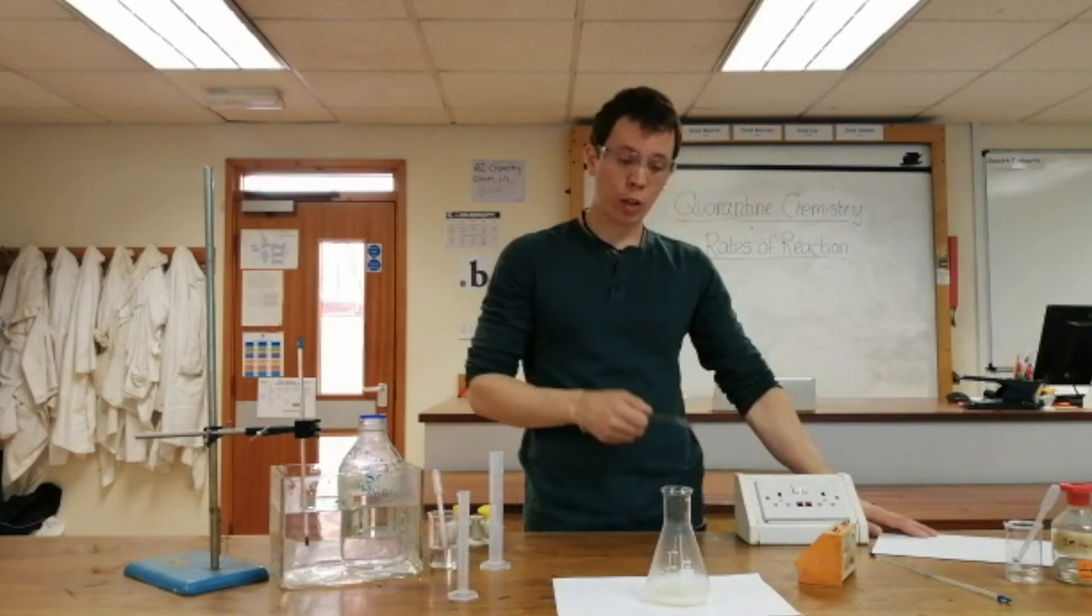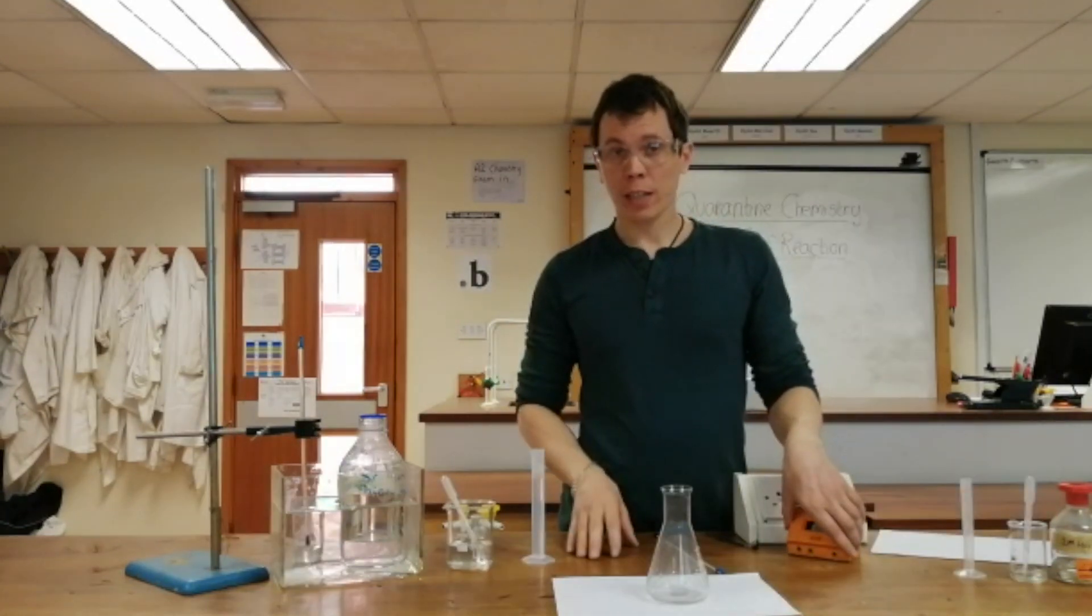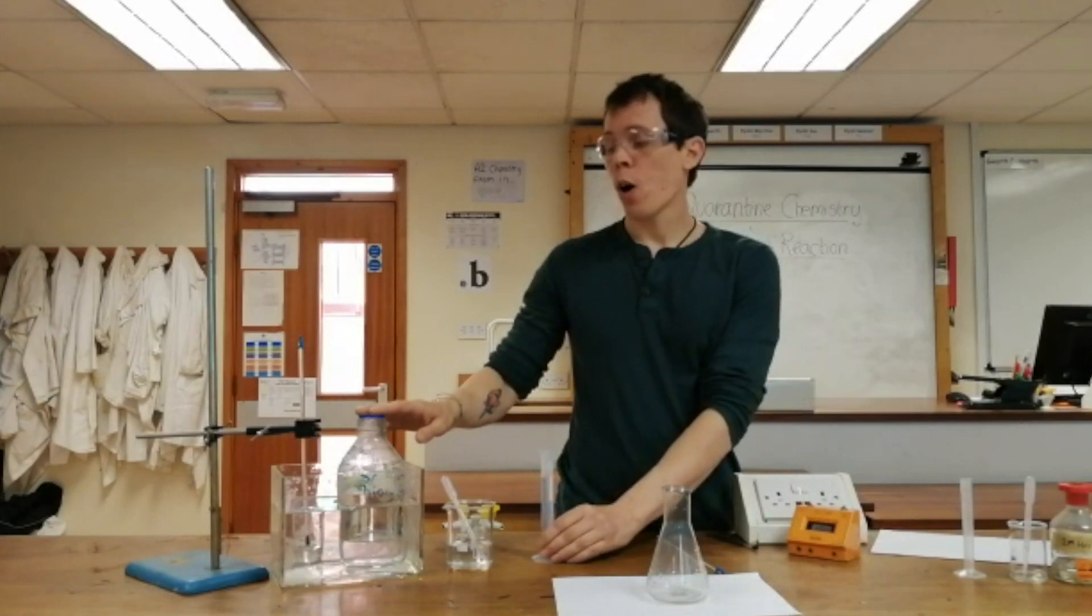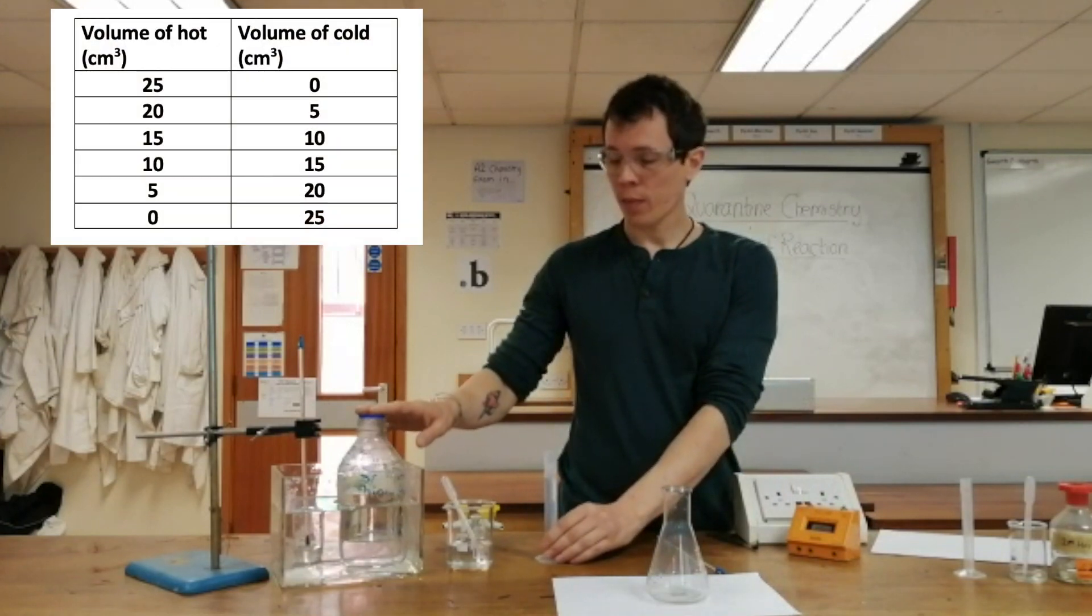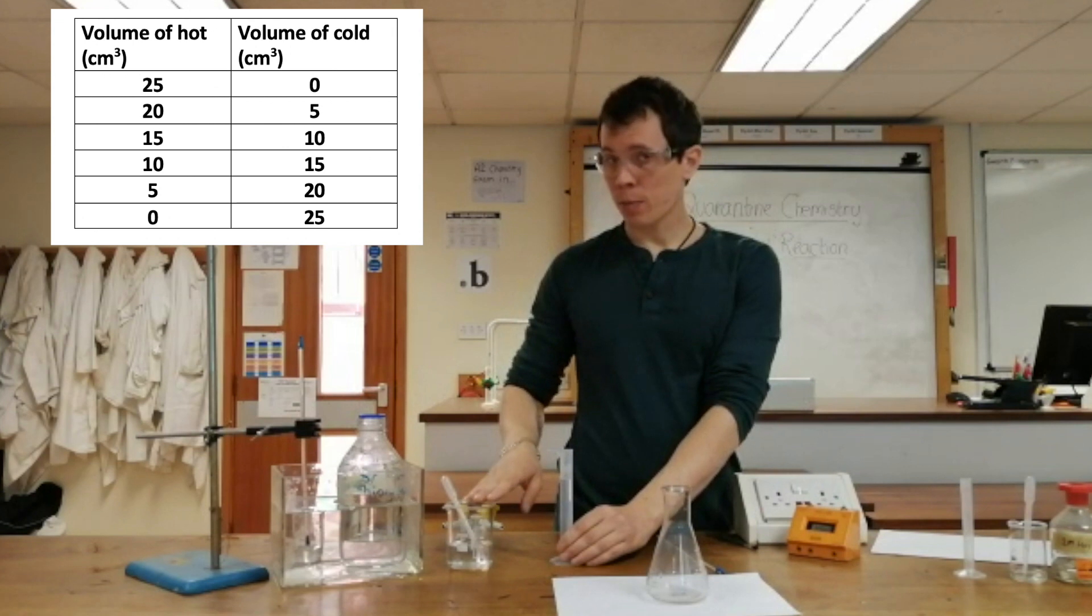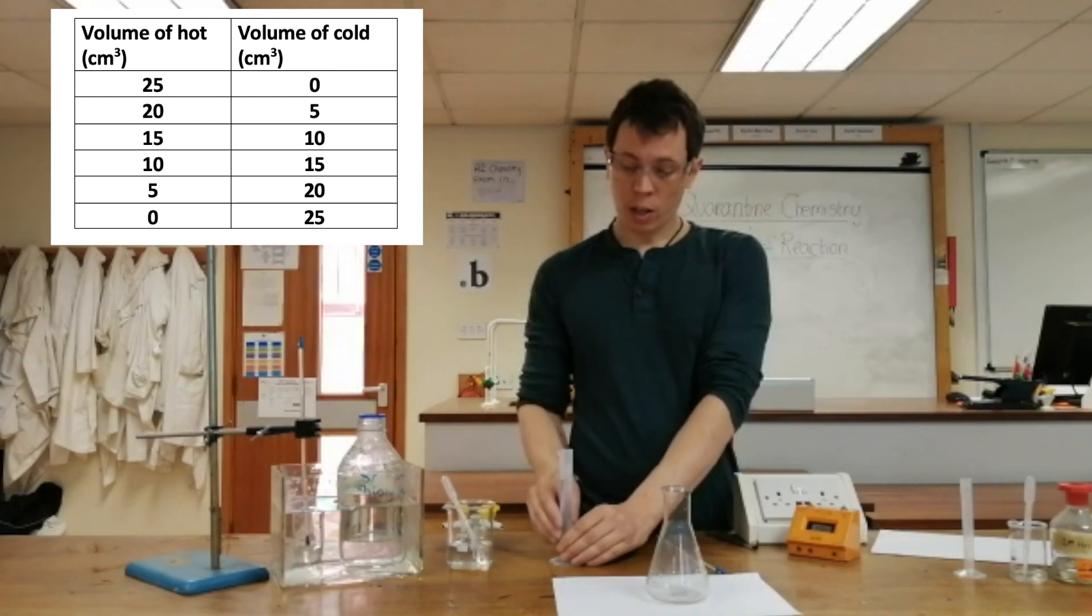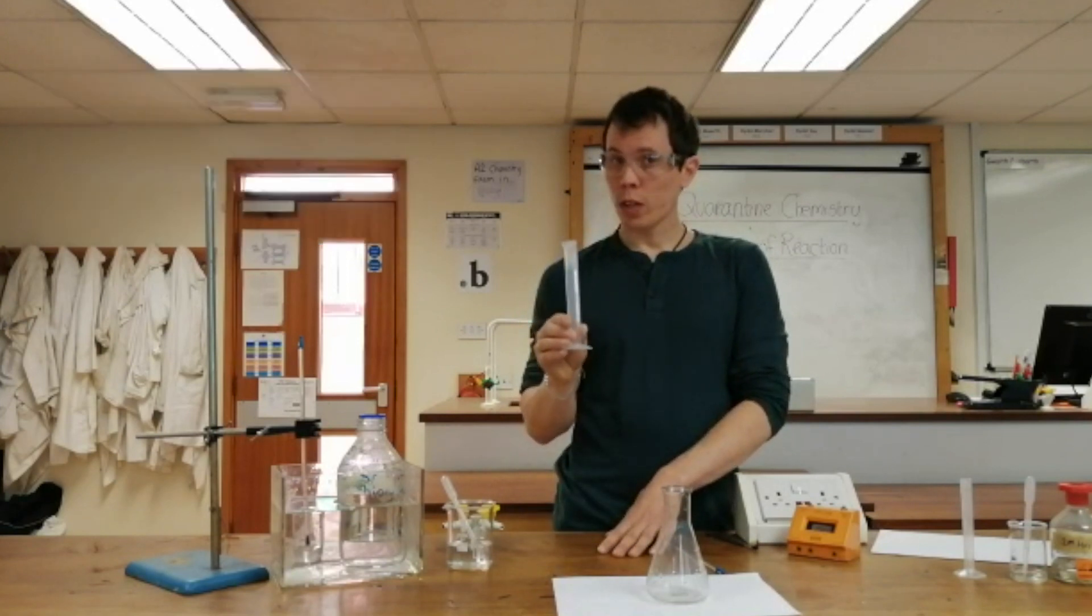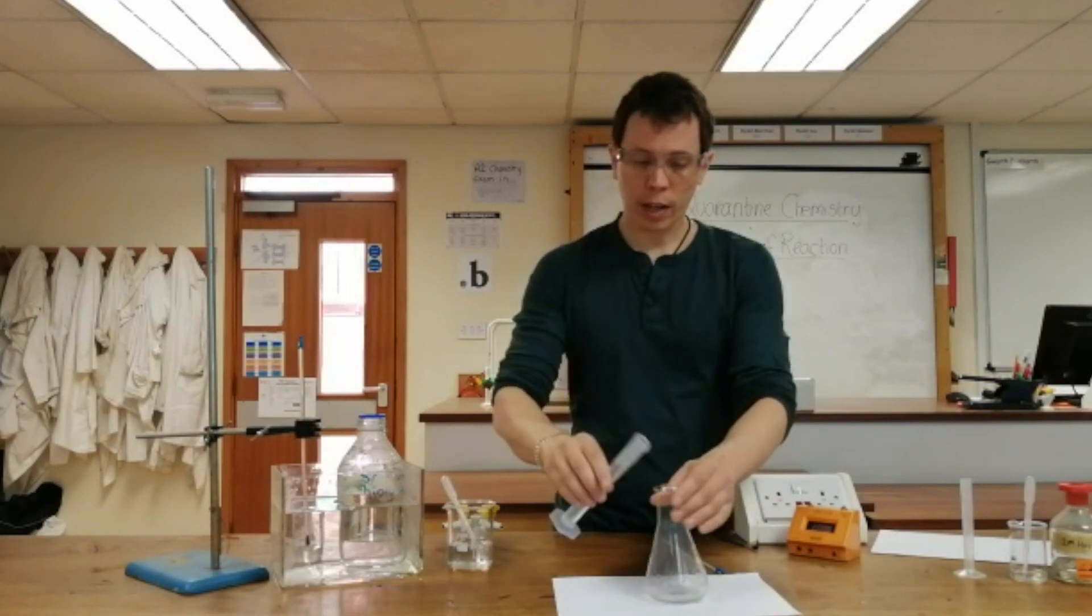I'm going to repeat the experiment, but this time I've measured out 20 centimeters cubed of the hot sodium thiosulfate and I've measured out 5 centimeters cubed of cold sodium thiosulfate from the fridge. So I've still got a total of 25 centimeters cubed, but this time it's going to be cooler than before. So I'll pour that in.